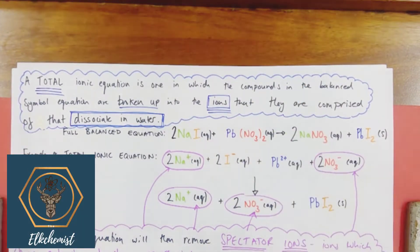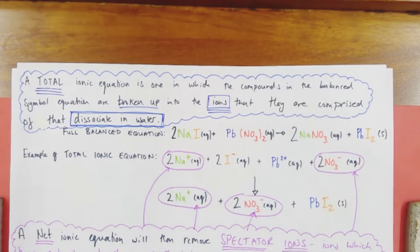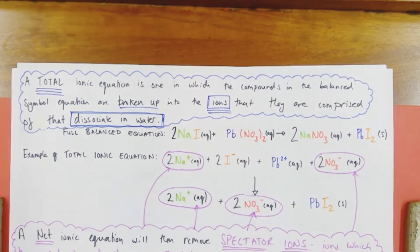How do ionic equations work? There are two types. There's a total ionic equation and a net ionic equation. And the really important one to get down to is the net.